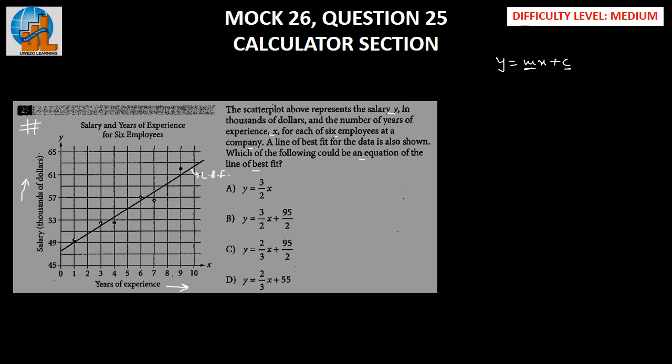Let's see the numbers here. We know when the years of experience is 1, the salary in thousands is 49. So when X is 1, Y is 49. This equation will look like M plus C equals 49. This will be our equation number 1.